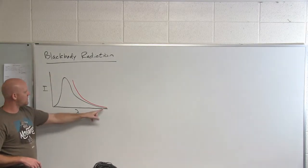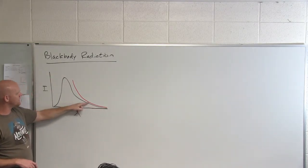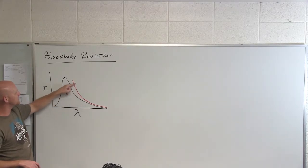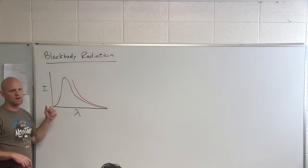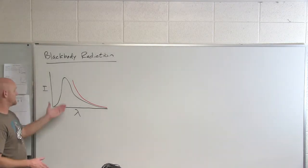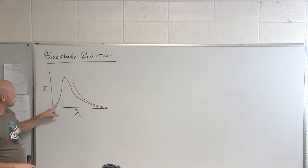They called it the ultraviolet catastrophe because their equation was a catastrophe. Reality was very different. As you went to a wavelength of zero, the intensity would go to zero.